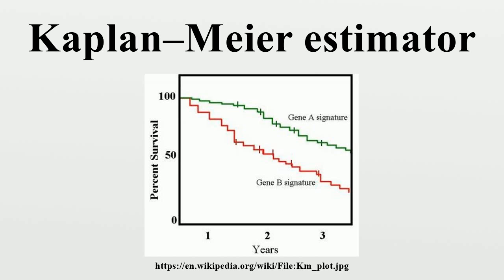In the graph, patients with gene B die much more quickly than those with gene A. After two years, about 80% of the gene A patients survive, but less than half of patients with gene B.